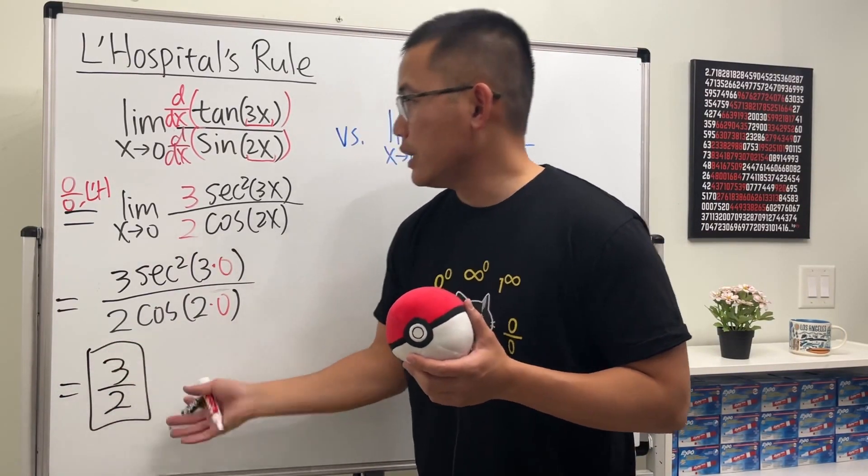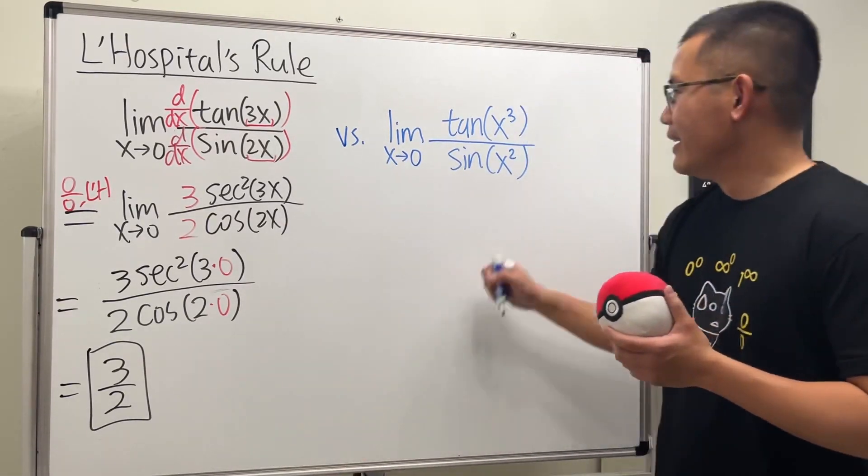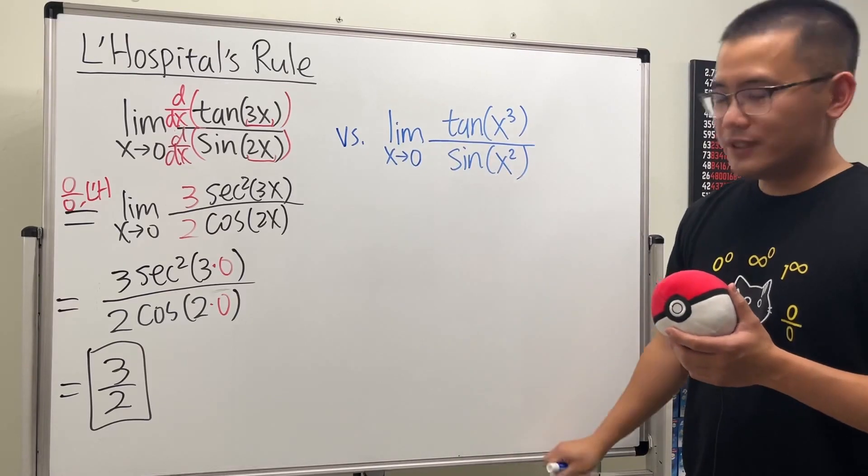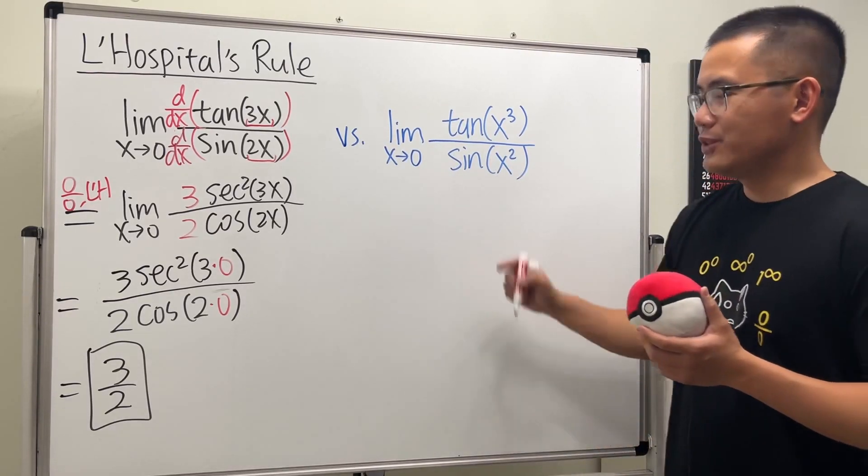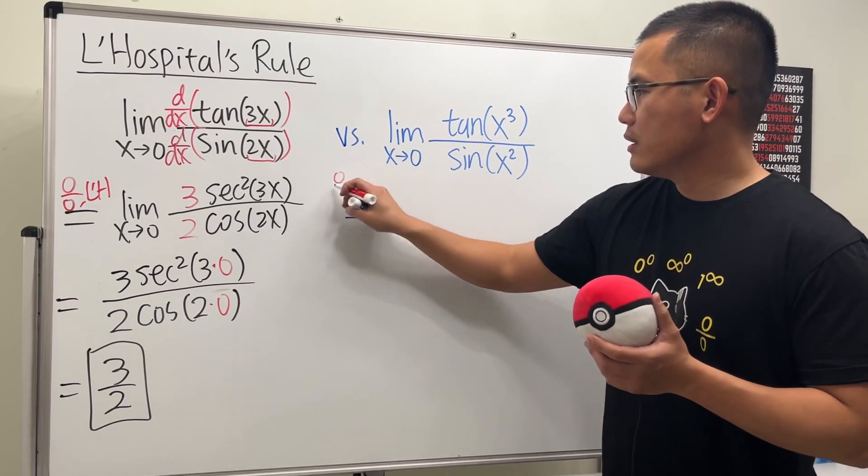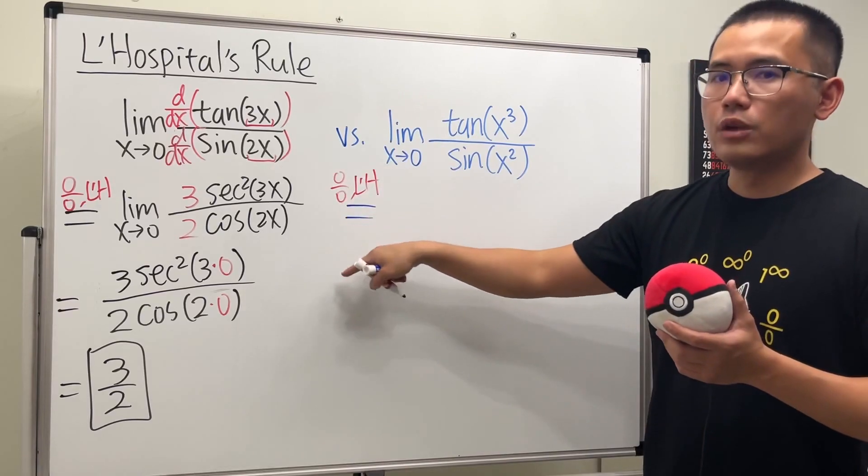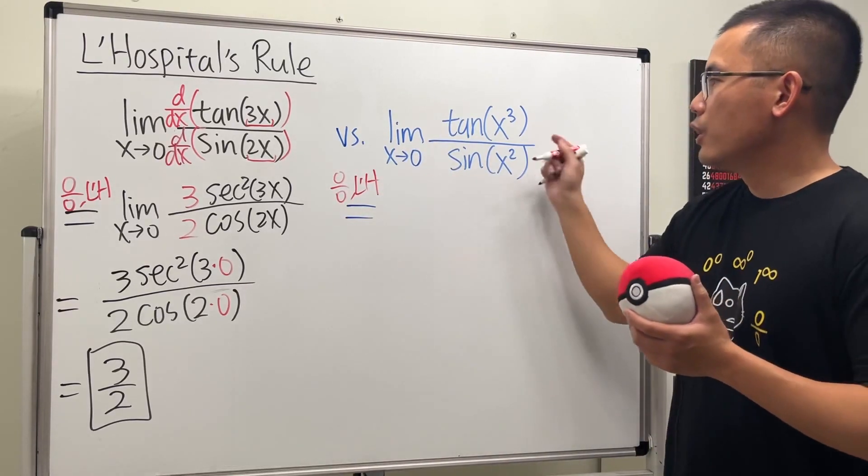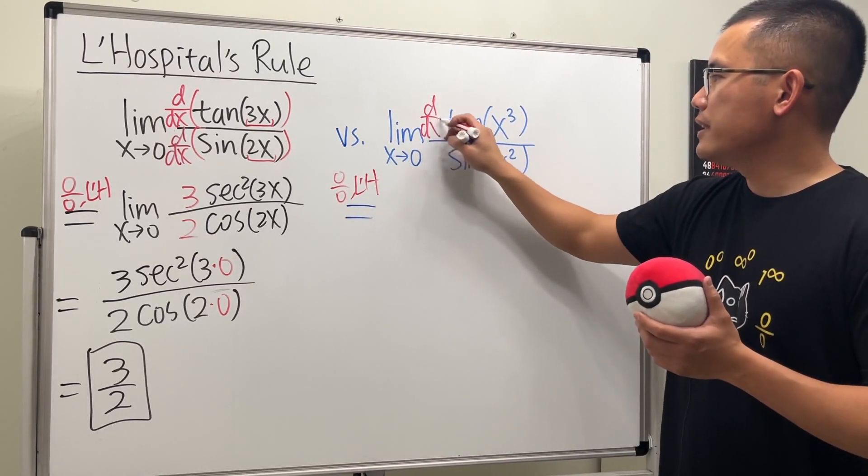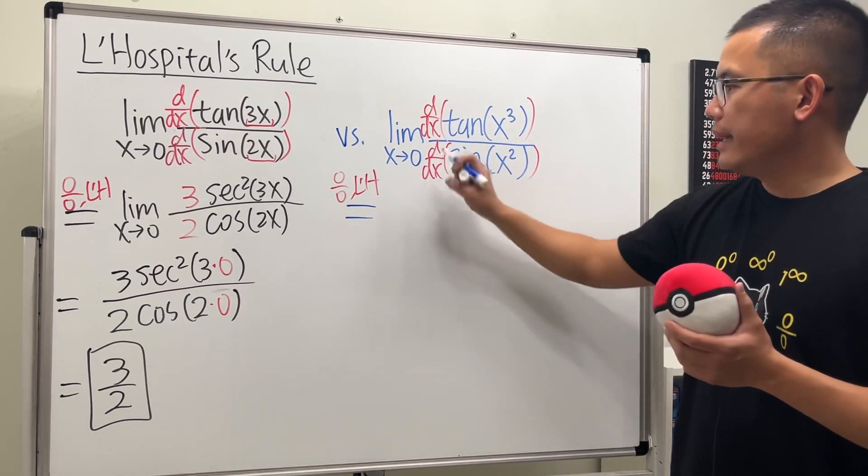For the second one, check this out. Yes, we are going to get zero over zero as well. And just be really careful with your derivative. And for now, let me just indicate this for you guys to make things super clear. It's zero over zero, so we get to use L'Hospital's Rule. Right here, differentiate the top and then also do the same thing on the bottom.